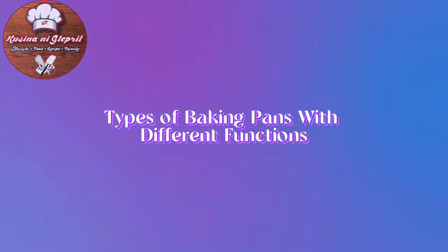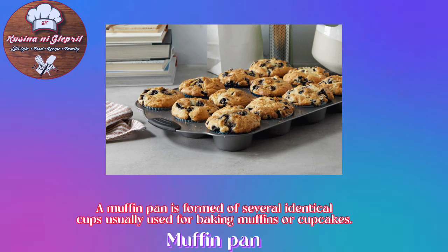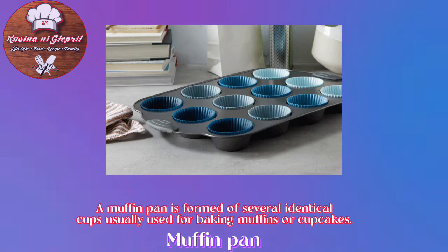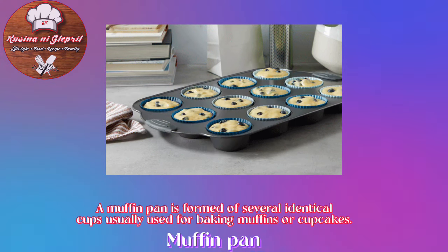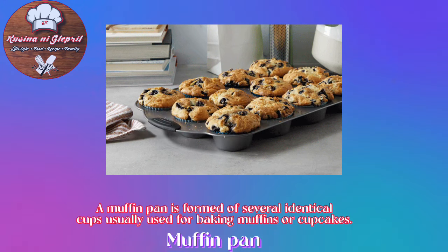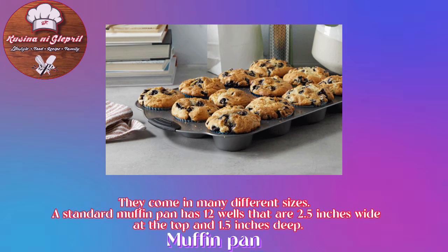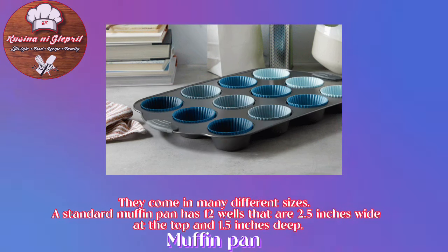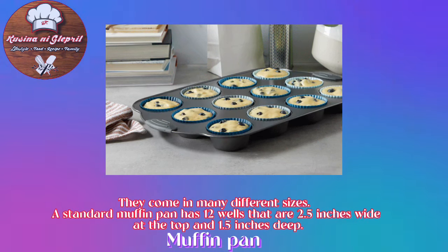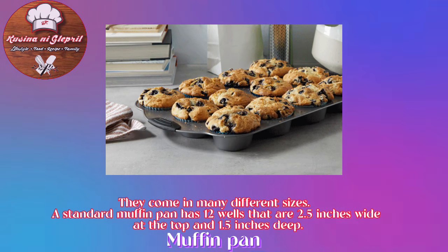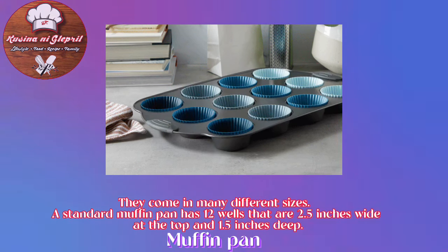Types of Baking Pans. Muffin Pan: A muffin pan is formed of several identical cups, usually used for baking muffins or cupcakes. They come in many different sizes. A standard muffin pan has 12 wells that are 2.5 inches wide at the top and 1.5 inches deep.